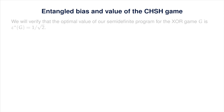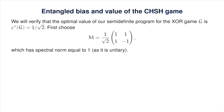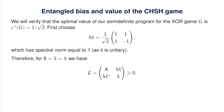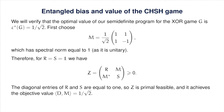We verify that the entangled bias of the CHSH game equals 1/√2 by exhibiting primal and dual feasible solutions that agree on the objective value. In the primal, take M to be the Hadamard matrix. It is unitary so its spectral norm equals 1; therefore, taking R and S equal to the identity gives a positive semi-definite block matrix that is primal-feasible. The objective value achieved is the inner product of D and M, which equals 1/√2, so the primal objective value is at least 1/√2.